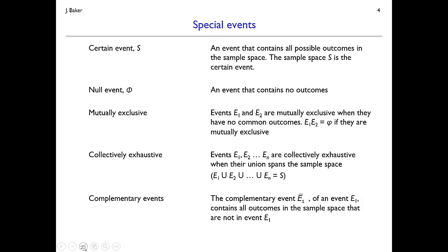There are some special events using these notations. A certain event is one we know will happen — it's equivalent to the sample space. The converse is a null event, sometimes denoted phi, which is an event with no outcomes in it. More interestingly, mutually exclusive events: E1 and E2 are mutually exclusive if they have no common outcomes, meaning no outcome can be in both E1 and E2. Mathematically, the intersection of E1 and E2 equals the null event.